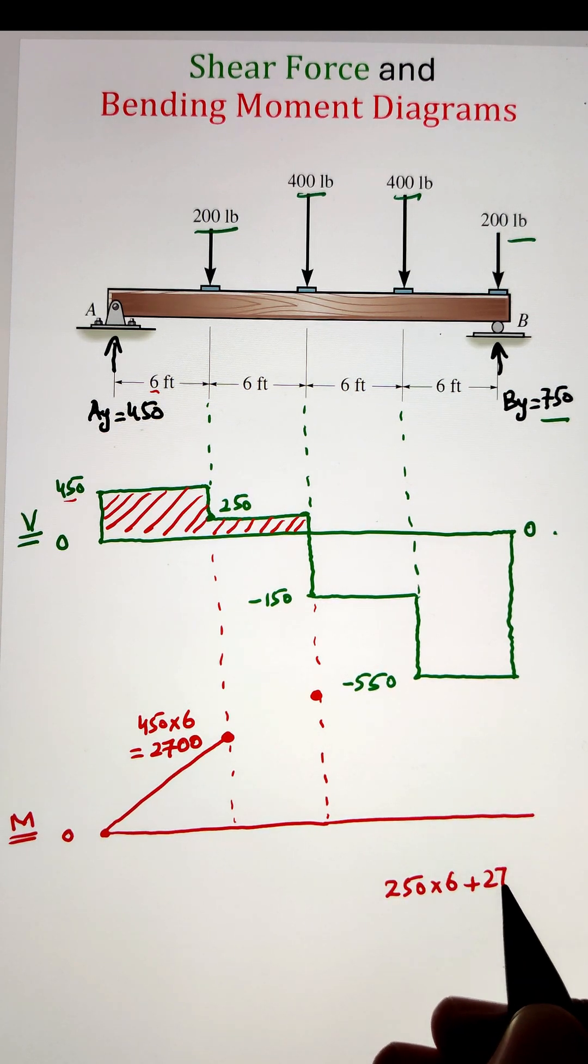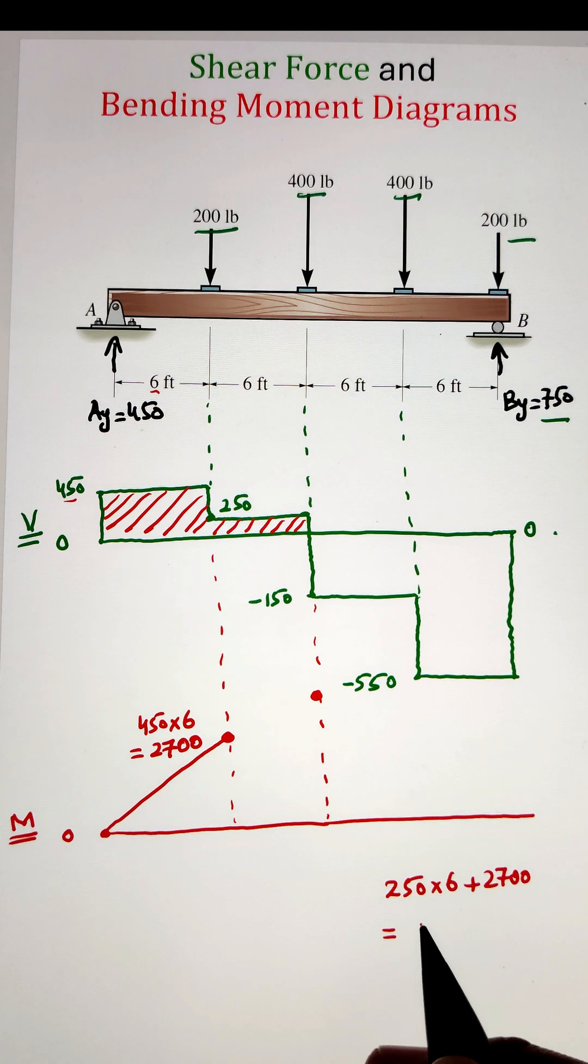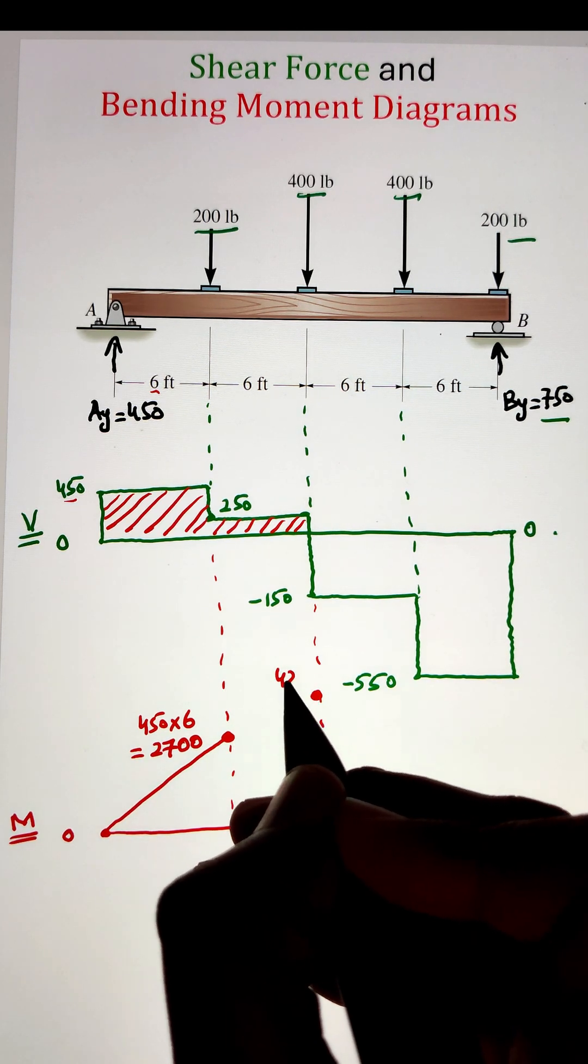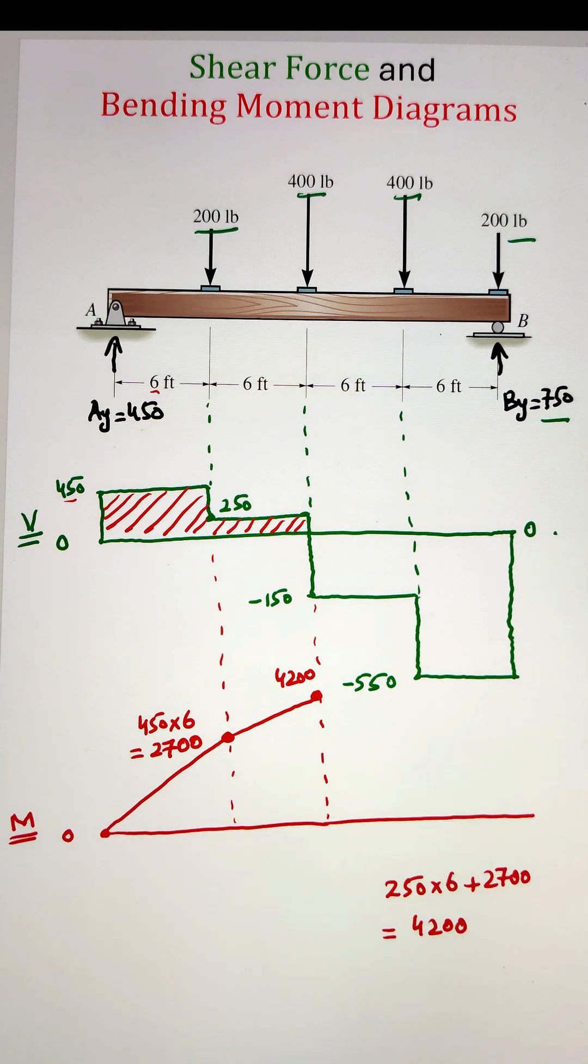Next, we have an area of 250 times 6. If we multiply them together and add up the 2700 in it, we get 4200.